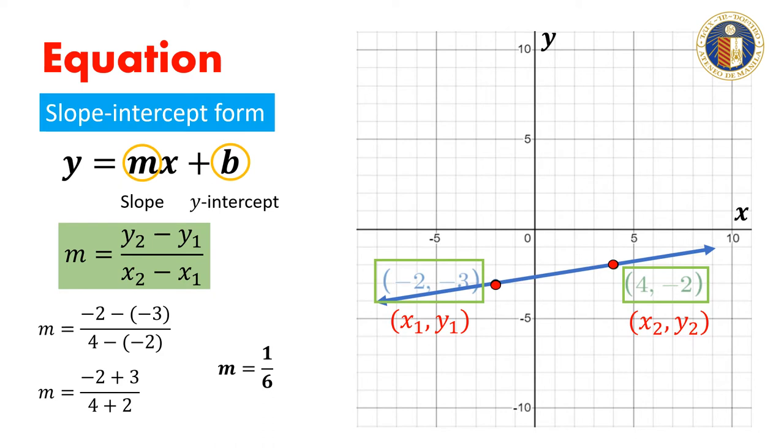Next, let us substitute 1/6 for m in our equation. We know that our equation should be y equals (1/6)x plus b.